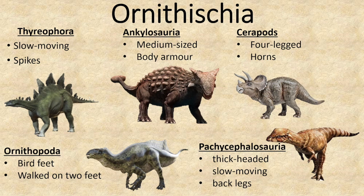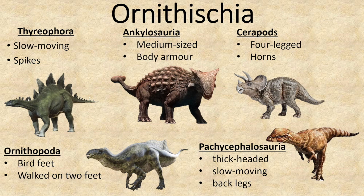The Ornithischia group was divided into five subgroups. First, the Thyreophora group — slow-moving dinosaurs with spikes, example: Stegosaurus. Next, the Ankylosauria group — medium-sized dinosaurs with body armour, example: Ankylosaurus. Then Cerepods — four-legged dinosaurs with horns, example: Triceratops. The Ornithopoda group — dinosaurs with bird-shaped feet that walked on two feet, example: Tenontosaurus. Lastly, the Pachycephalosauria group — thick-headed, slow-moving dinosaurs that walked on their back legs, example: Acrothalus.